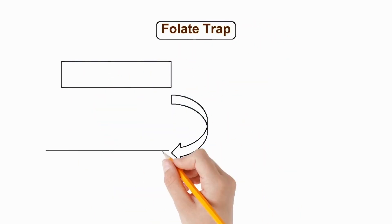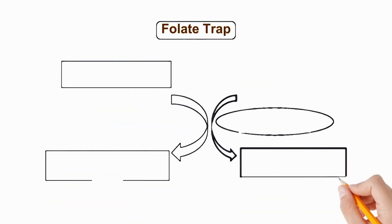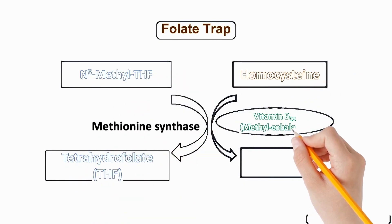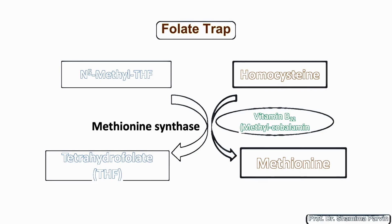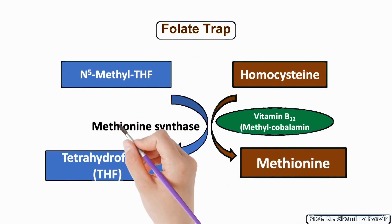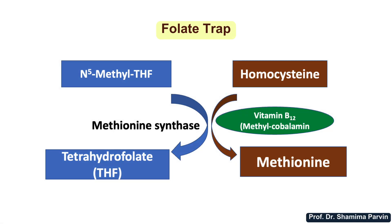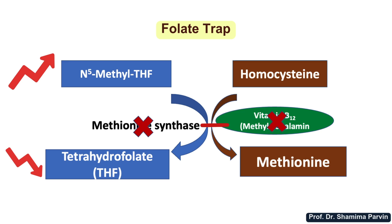Now I'll explain the basic mechanism of the folate trap. You can notice two substrates: N-methyl tetrahydrofolate and homocysteine. The N-methyl tetrahydrofolate is an inactive form of folic acid. When these two substrates participate in a reaction, the products will be tetrahydrofolate — the active form — and methionine. This reaction requires two enzymes: methionine synthase and the coenzyme vitamin B12.